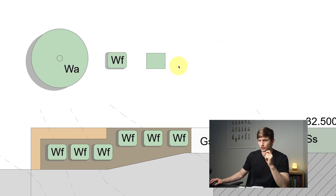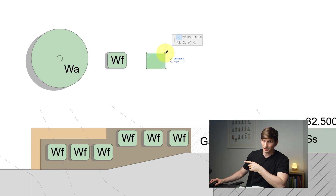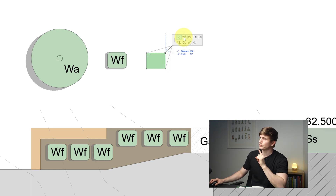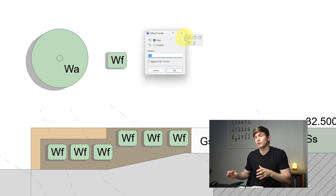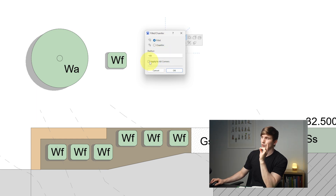To give it that rounded corner aesthetic, click on the corner node, click once more and drag — this brings up the pet palette. On the pet palette, click the second option, which asks to fillet or chamfer the corner. Choose fillet and put in a radius of 100.